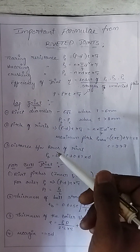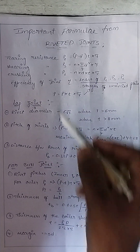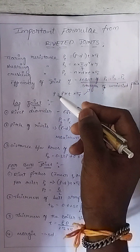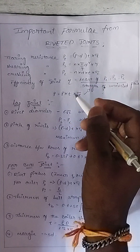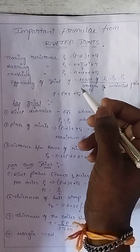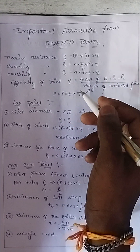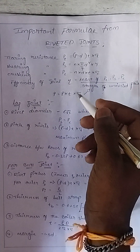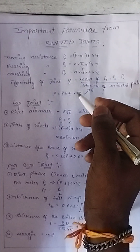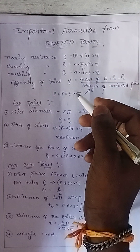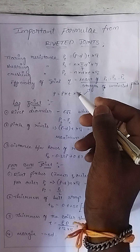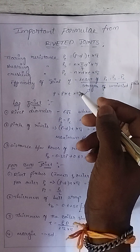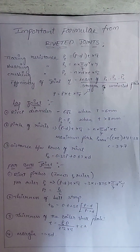These are the important formulas from riveted joints. When given data is provided, substitute into the appropriate formula. Subscribe to this channel. If you have any doubts, post them in the comment section and I will clarify. Thank you so much for watching.